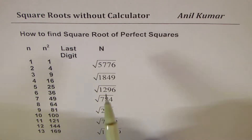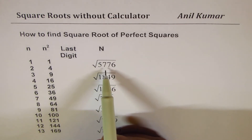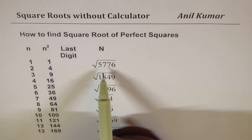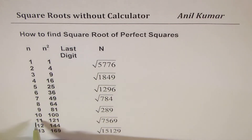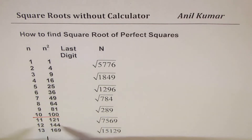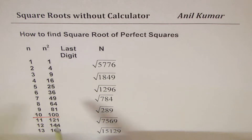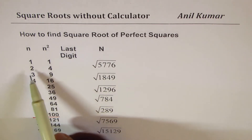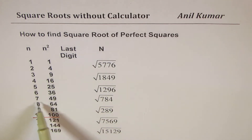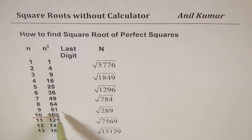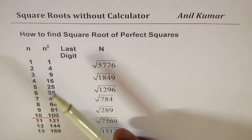What we really need to know is the squares of the first ten numbers. At least this much you should know to find the square root of any perfect square. I have a list here: 1²=1, 2²=4, 3²=9, 4²=16, 5²=25, 6²=36, 7²=49, 8²=64, 9²=81, 10²=100.